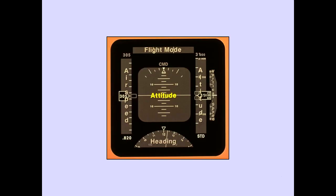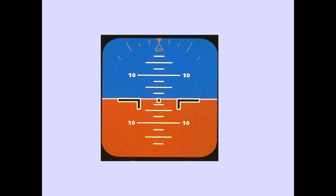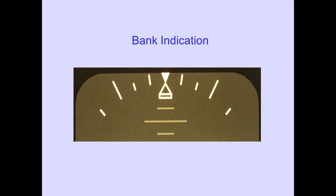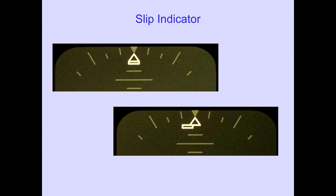The attitude indication is located in the center of the PFD. The airplane symbol indicates the position of the airplane relative to the horizon line. A pitch scale is also displayed. The bank indicator and scale are located at the top of the attitude indication. The selected IRS provides pitch and bank information. A part of the bank indicator is the slip indicator; the box below the triangle will displace to indicate a slip.